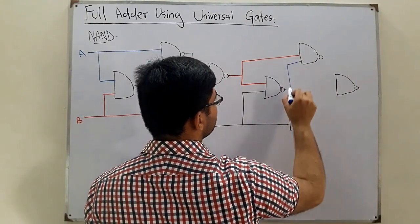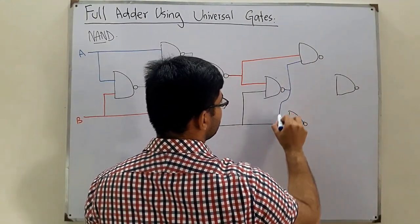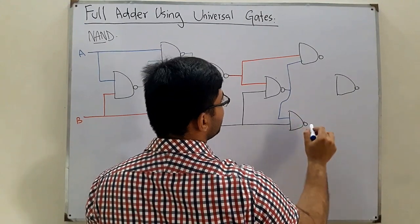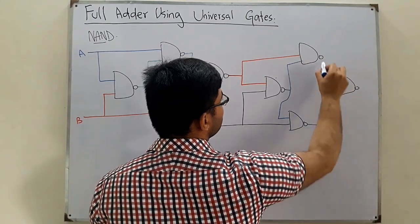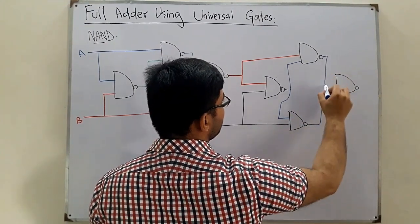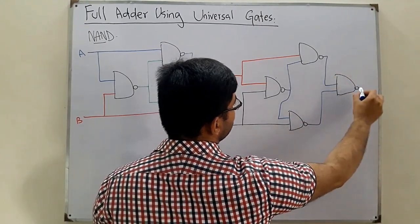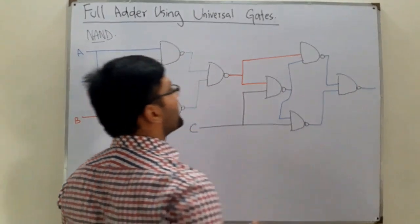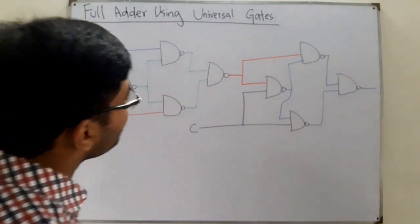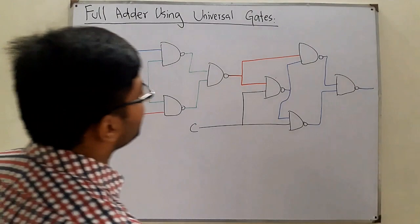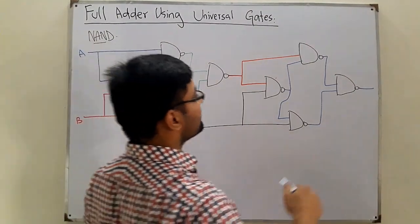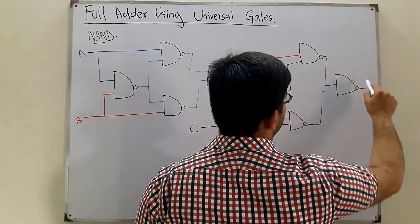Now you take the outputs and feed them into two more gates, and from those two outputs you feed into one final gate, giving you the output. This is for the sum.